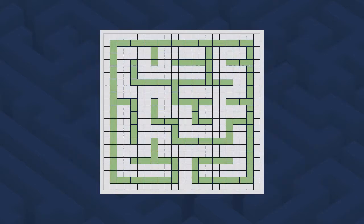Maze design can be as simple as filling a given shape with a series of winding paths, which lead from one external entrance to a goal — either to another external exit, or sometimes leading to an interior point, often in the center. However, mathematics are usually used to plan out the routes and dead ends found in such puzzles.